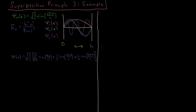Now let's do an example that really shows the superposition principle in action. We're looking at particle-in-a-box wave functions, psi_n of x, depending on some integer n. We have some plots going from 0 to l, where the wave function is constrained to be non-zero — it's zero outside of this, where the potential is infinite.